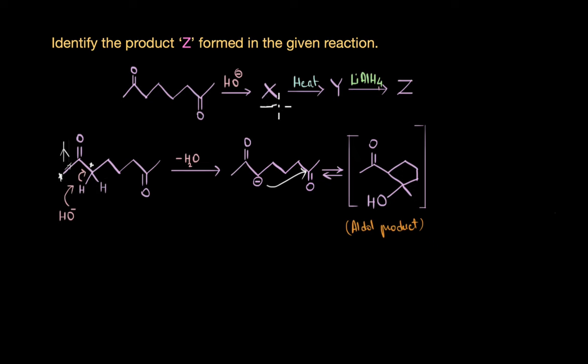This is compound X. The next step is heating this aldol product. When we heat this aldol product, a dehydration reaction takes place where elimination of a water molecule happens. This typically occurs between the alpha and the beta carbon atoms.